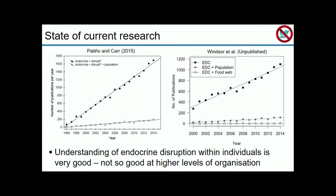A relatively recent paper looked at endocrine disruption and tried to understand at what scales we're looking at this problem. Over time, publications on endocrine disruption are ever-increasing, but at broader biological scales such as populations and food webs, our understanding is limited by an absence of research. There's a clear research gap — we're still in the low double digits in terms of research on population and food web scale effects.